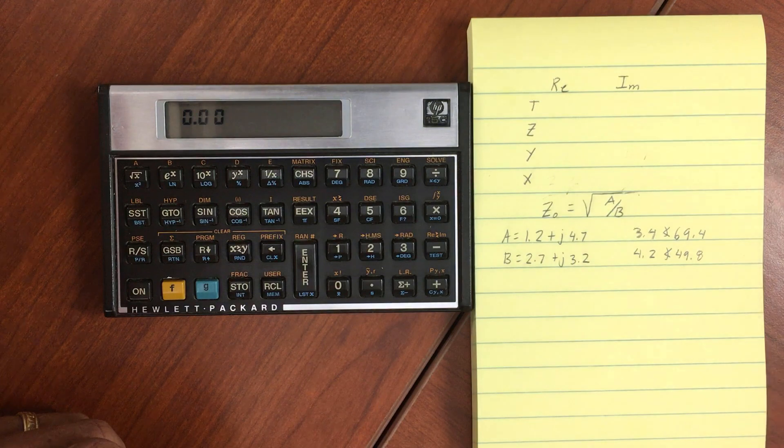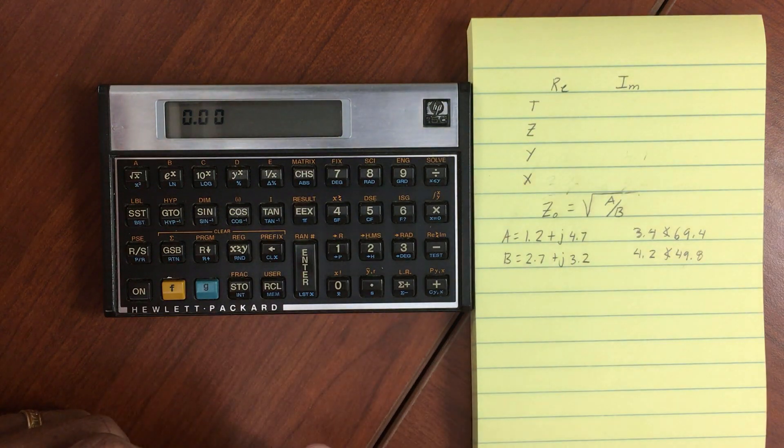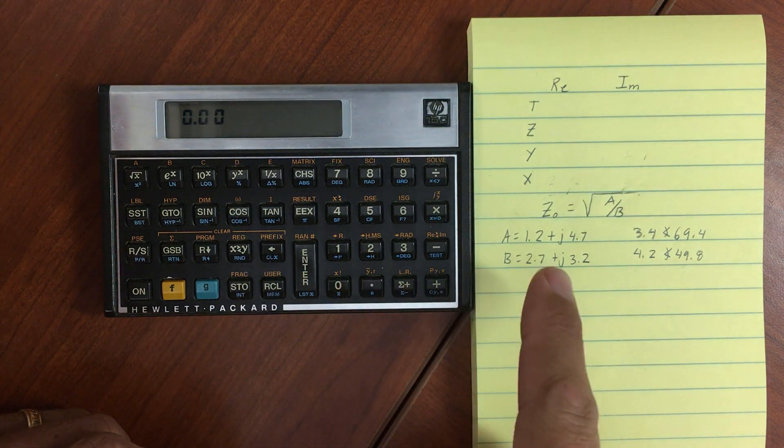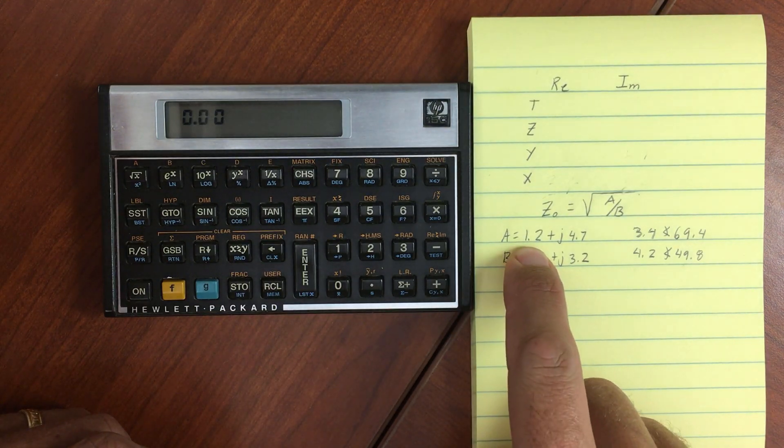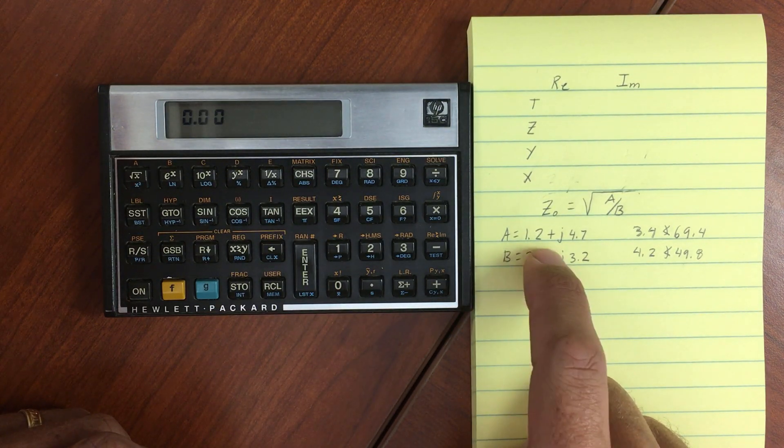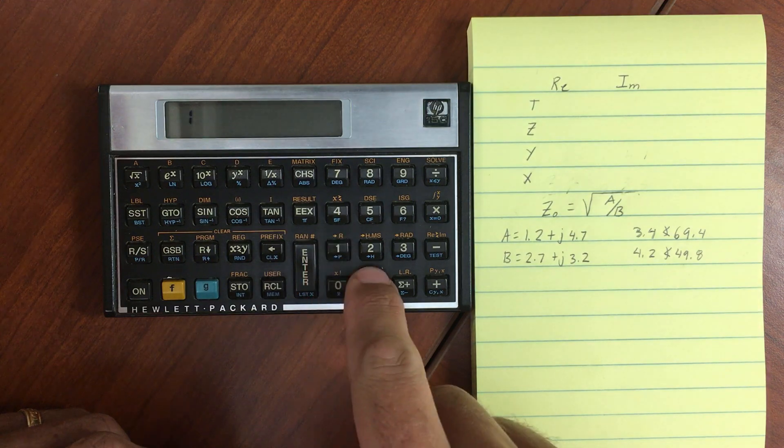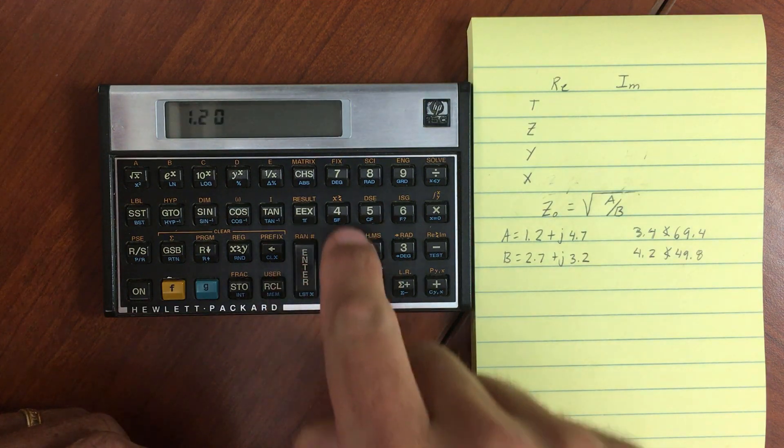The first method, which I prefer, would be to enter in your real portion of your number. So let's say I enter in this complex number, so 1.2, hit enter, and then 4.7.